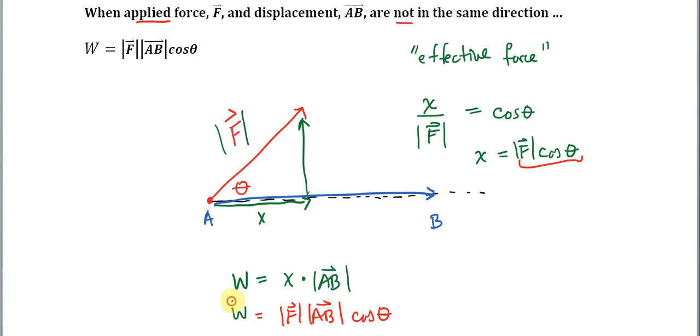So plug that in and just rearrange things a little bit. That's the magnitude of F times the magnitude of AB times the cosine of theta. As we work through the rationale for this formula, we also are able to clarify that theta is the angle between the applied force and the displacement.